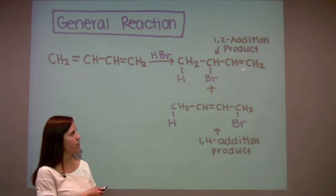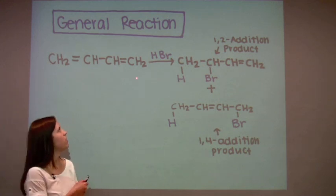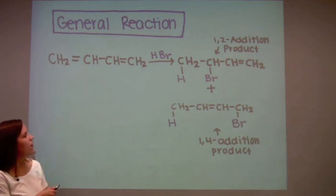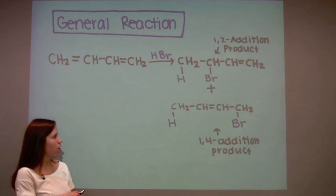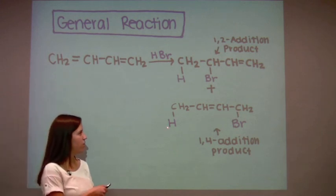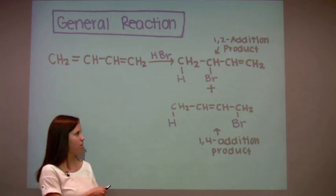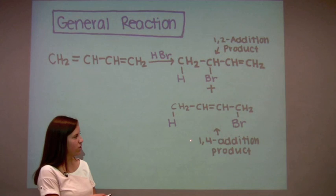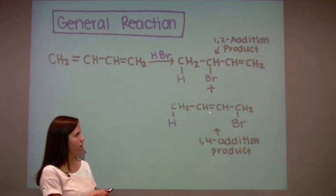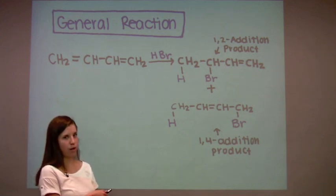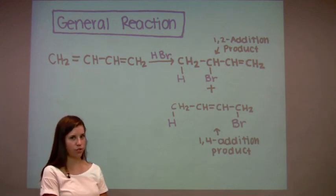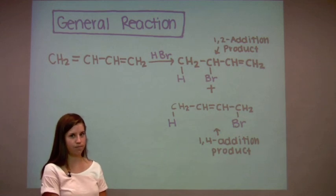Note that the pi bond is still where it originally was in the reagent. For the second product, we have hydrogen bonded to the first carbon and bromine bonded to the fourth carbon, and this is known as the 1,4 addition product. Note here that the pi bond has now changed to be bonded between the two central carbons.